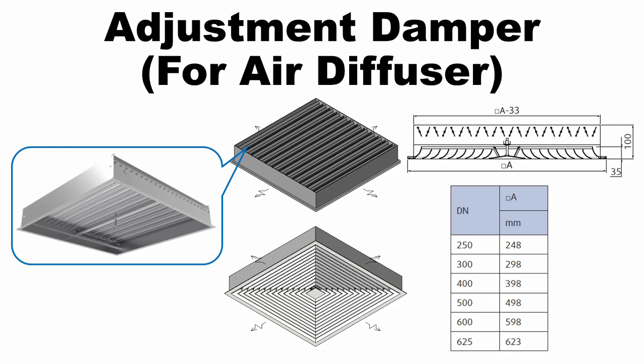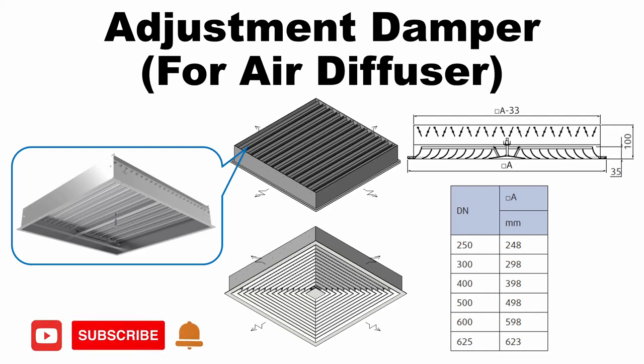Hello everyone. Today I would like to show you how to create an adjustment damper Revit family for an air diffuser. In this video, I will create two parts of the family: main body and damper blade, and then load and combine them into the main family. I will use and load into the created air diffuser family, and refer to the dimensions in the picture to create the parameters. Please subscribe to the channel and click the notification bell for the next video. Let's go to Revit.